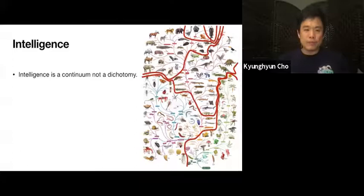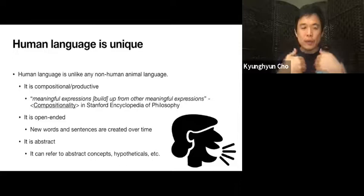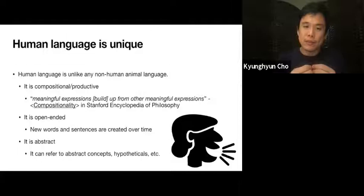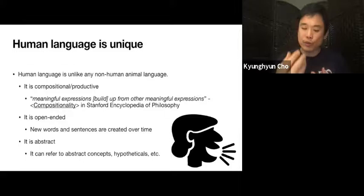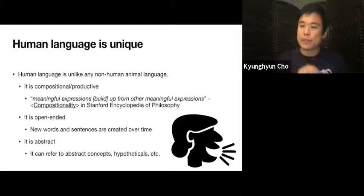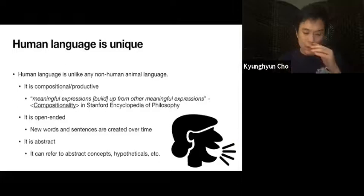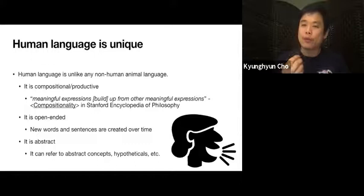However, one thing that does set humans apart from all the other potentially intelligent beings is language. And human language, the language that we use effortlessly, is unlike any language that is spoken by non-human animals. Of course, you can count all those chemical signals that microorganisms use as well. And even then, our language — the human language — is very, very exceptional.